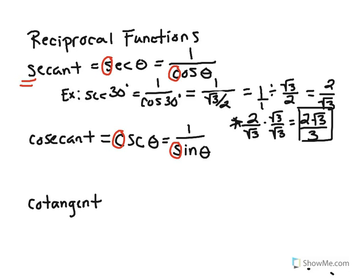And then, of course, cotangent is the simplest one to remember because it has tangent in the name of it. This is shorthanded as C-O-T, cotangent, and theta. This is the reciprocal function of 1 over tangent theta.